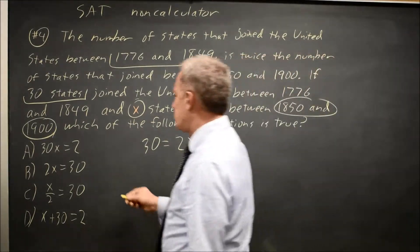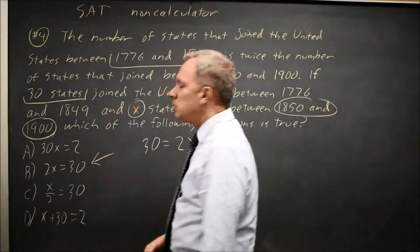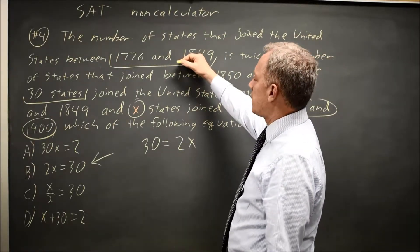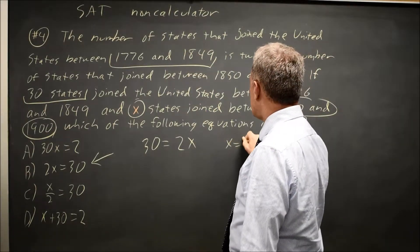So that would be choice B. Alternatively, you can work it through. Since 30 is twice X, X must be 15.